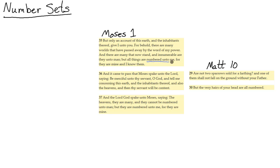All things are numbered unto Him, for they are mine and I know them. And Moses spoke unto God: Be merciful unto thy servant and tell me concerning this earth and the inhabitants thereof. And the Lord spoke unto Moses: The heavens, they are many, and they cannot be numbered unto man, but they are numbered unto me.